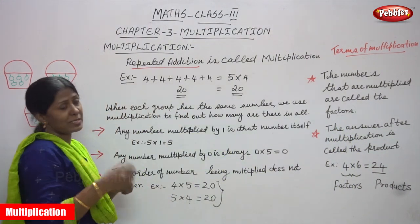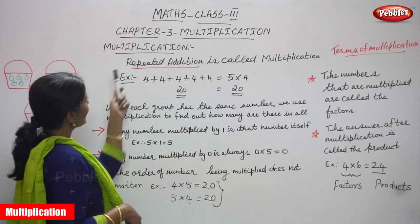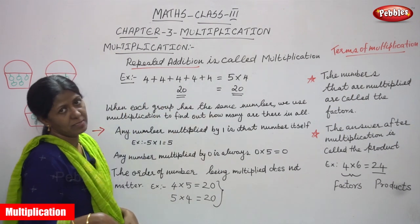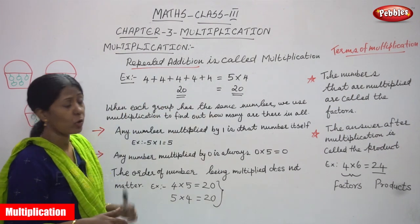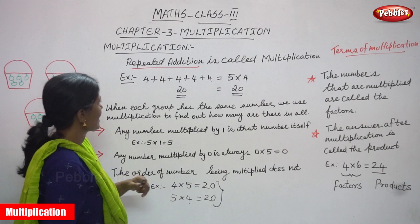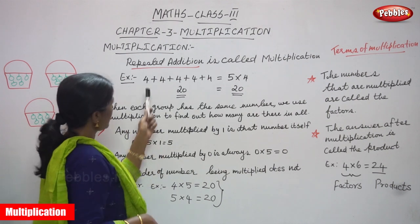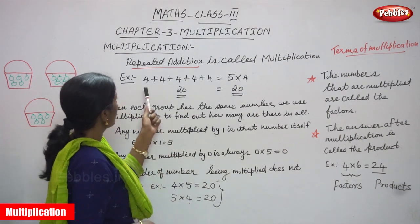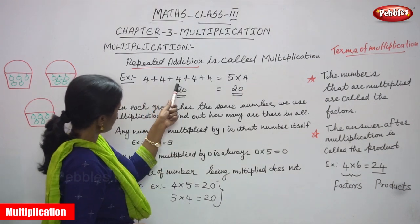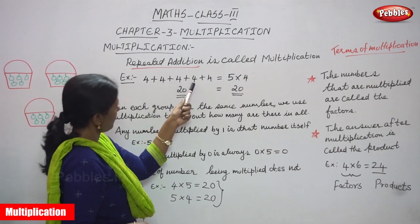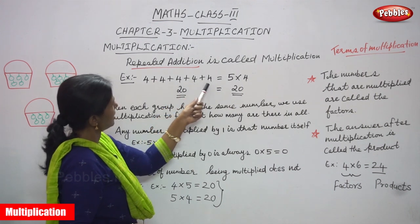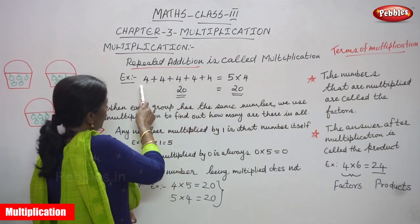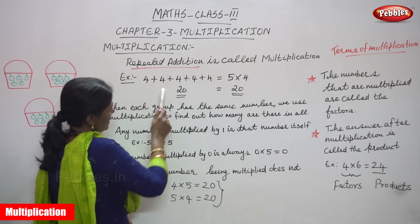First, we must know what is multiplication. Repeated addition is called multiplication. For an example, I am just writing the numbers: 4 plus 4 plus 4 plus 4 plus 4. So you just add everything. 4 plus 4 is 8.